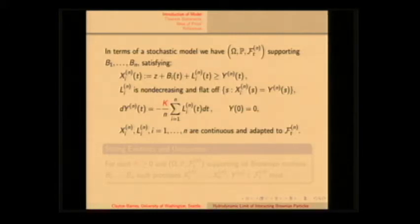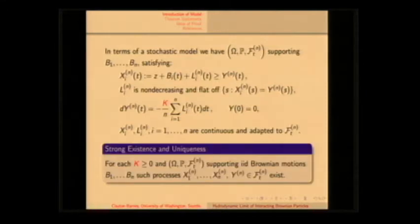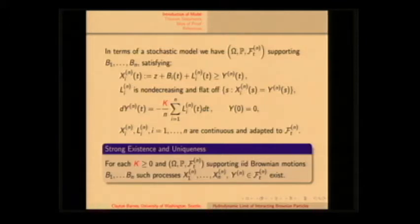This is a system of stochastic processes, and it exists — strong existence and uniqueness. It exists strongly in the sense that if you give me any probability space that supports n Brownian motions, I can exhibit such a solution on that filtered probability space. That's what strong solution means.